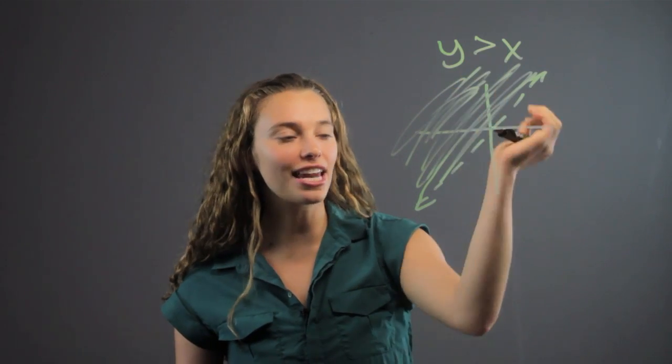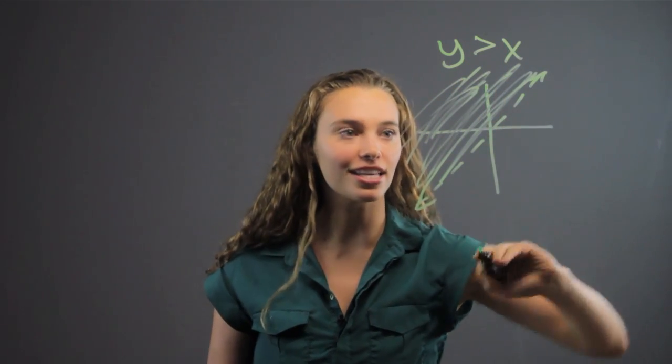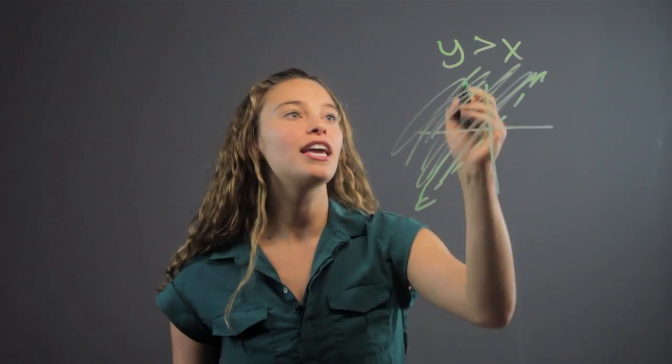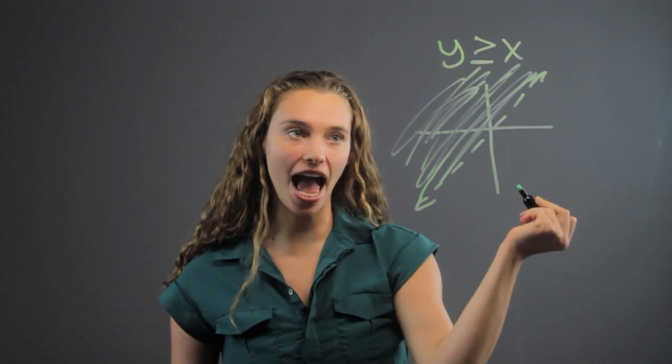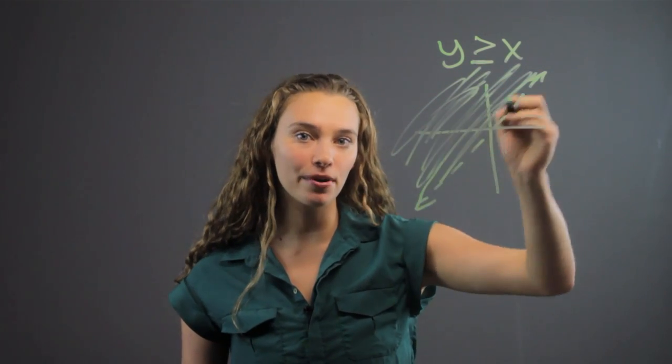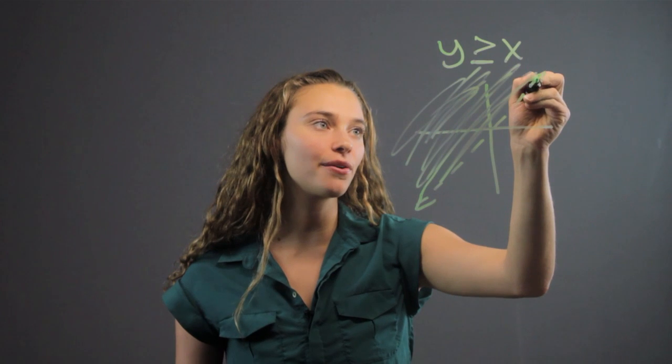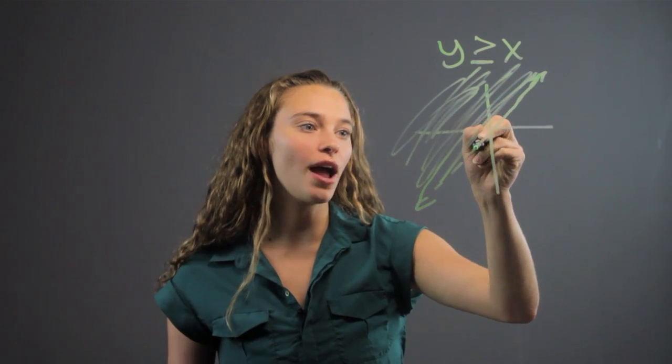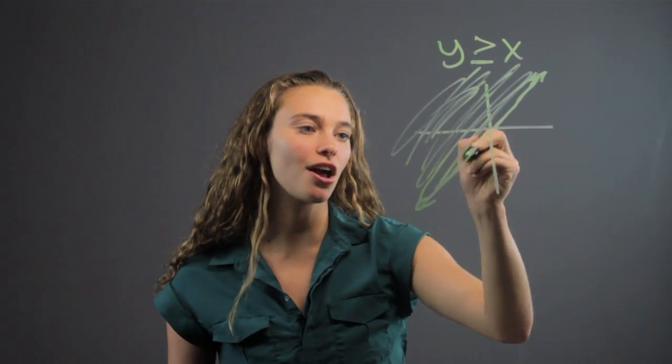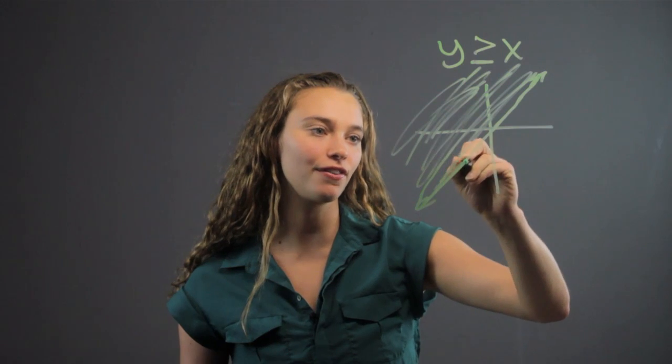If y was less than x, we would shade below this line. Now, if y is greater than or equal to x, then it includes the numbers on this line, so we're actually going to write this whole line here. We're not going to do the dotted line, we're going to fill it all in.